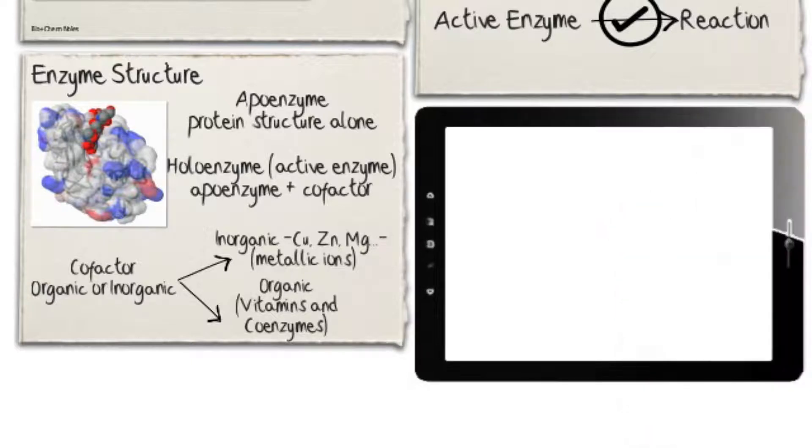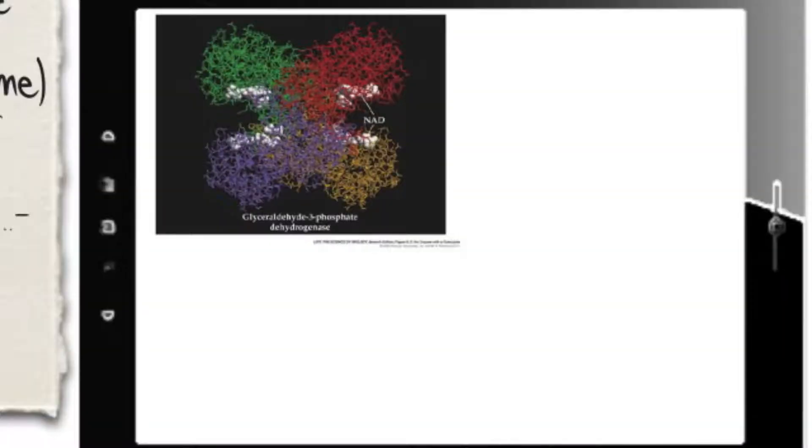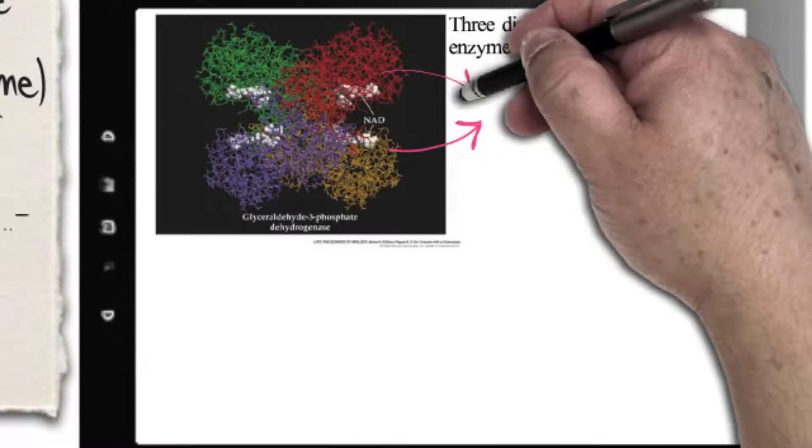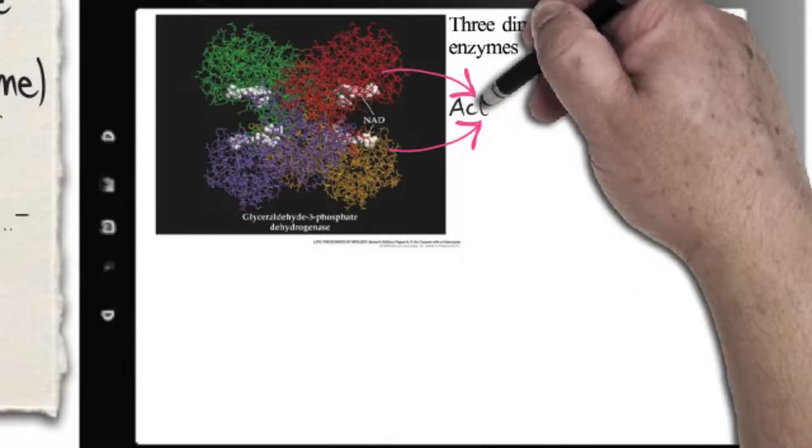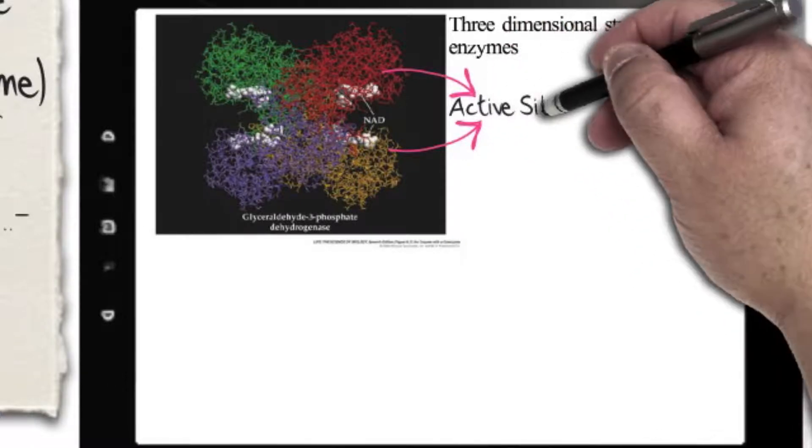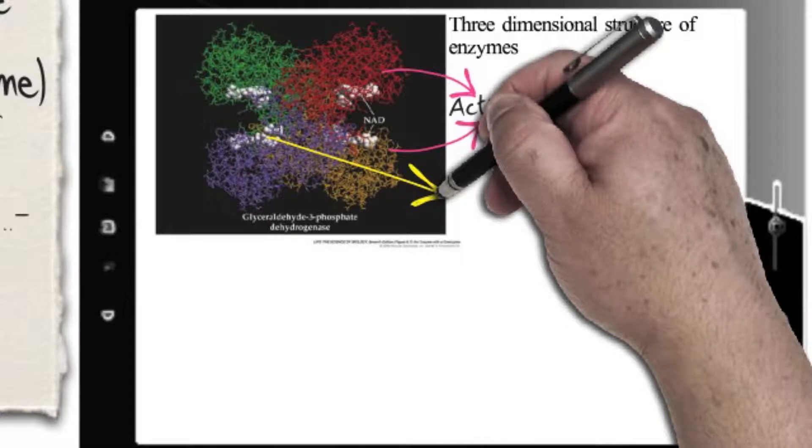The three-dimensional structure of an enzyme is very important, as its activity depends on it. The reason is that enzymes need to bind the molecules upon which they will act, and those molecules need to bind specifically in the region of the enzyme called the active site.